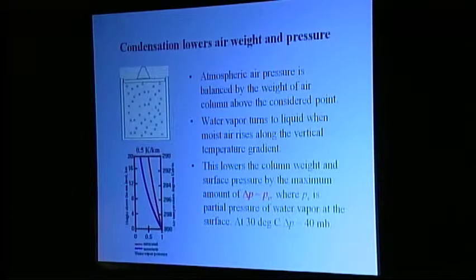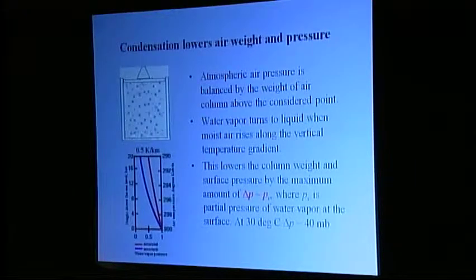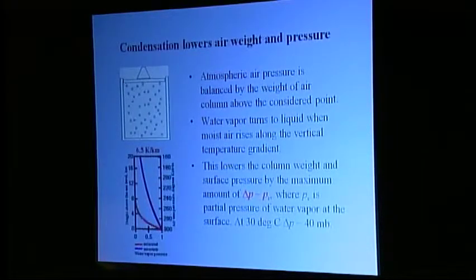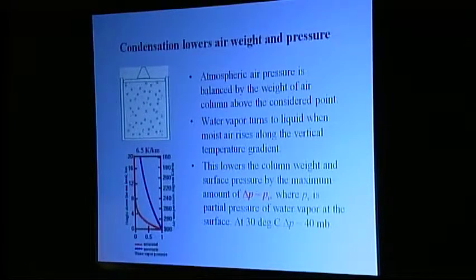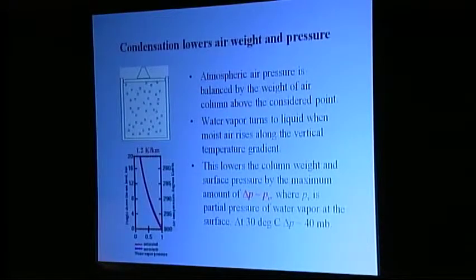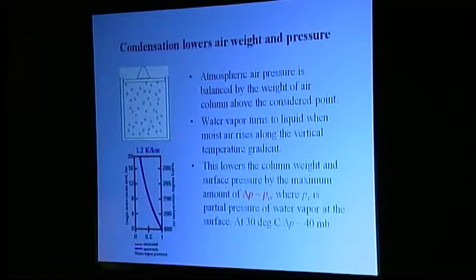In the result, air in the column expands and the air pressure at the surface drops. Now, why does water vapor condense at all? It does so due to the presence of a sufficiently large negative vertical gradient of air temperature. As a moist air parcel rises, it cools, so water vapor condenses and precipitates.